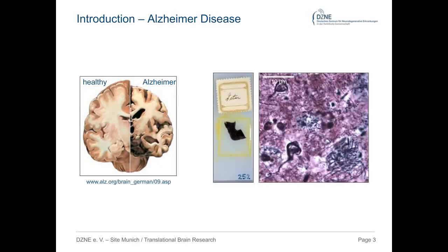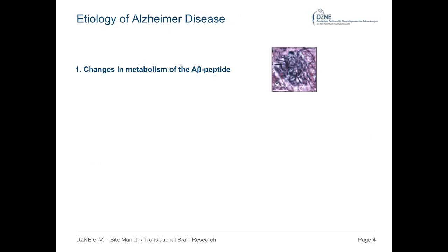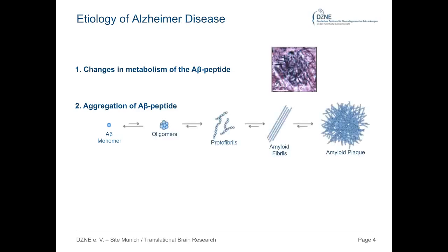This historical brain section from the first Alzheimer's patient, Augusta D., shows the two microscopic hallmarks of the disease: amyloid plaques on the right and neurofibrillary tangles on the left. The main component of amyloid plaques is the amyloid beta peptide, or A-beta, derived by sequential cleavage of the amyloid precursor protein, APP. A-beta monomers can form oligomers, protofibrils, amyloid fibrils, and finally large microscopic plaques.